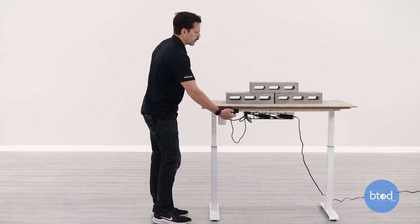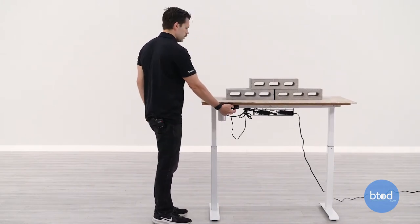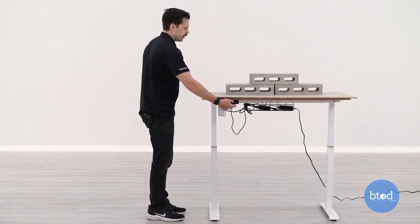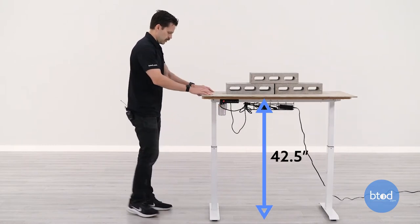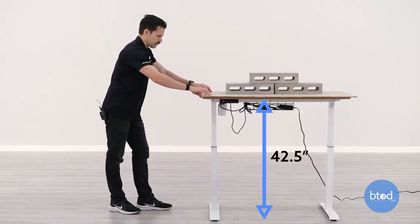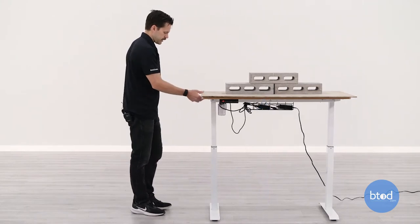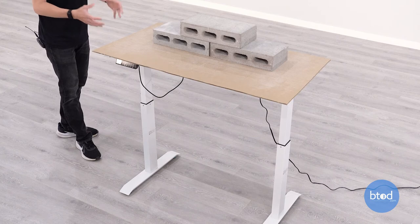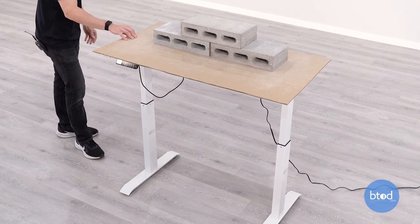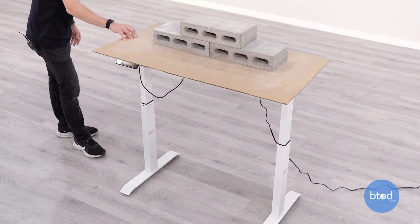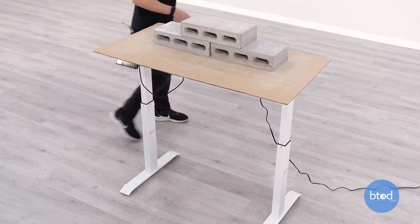So we'll go ahead and bring it up to the next height, which is 42 and a half inches. This is going to be the average height for a standing male in the U.S., which is 5'9". They would stand at 42 and a half inches. You can see it really doesn't take a lot to kind of get this thing going. It's lightweight. There's really not a lot there. So that's the big issue for this desk is the frame is just so light.